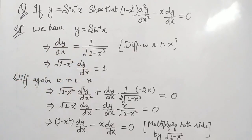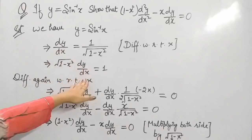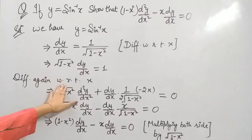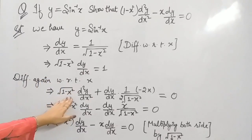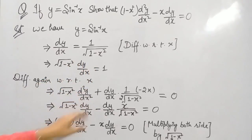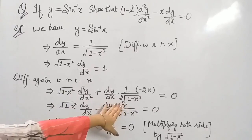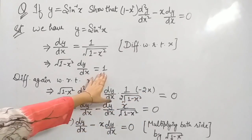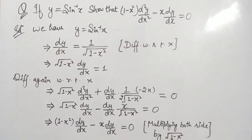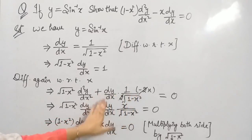Cross multiplying, we get √(1 − x²)·dy/dx equals 1. Differentiating again with respect to x using the product rule: the first term √(1 − x²) remains and we differentiate dy/dx to get d²y/dx², plus dy/dx remains and we differentiate √(1 − x²). The derivative of √(1 − x²) is −x upon √(1 − x²), giving us √(1 − x²)·d²y/dx² minus x·dy/dx upon √(1 − x²) equals 0.